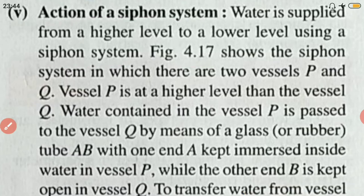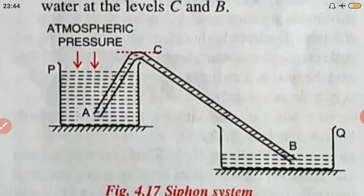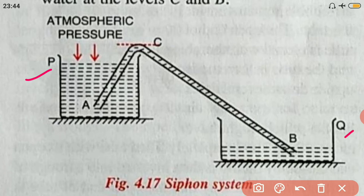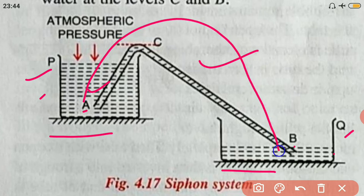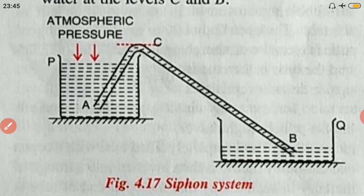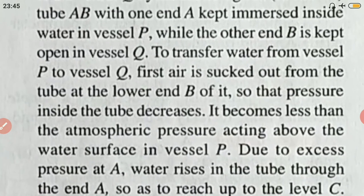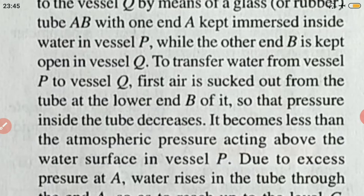In the diagram, vessel P is at a higher level than vessel Q, connected by tube A-B. Initially, the pipe is dipped into the liquid in vessel P. The pipe can be of various shapes — it does not have to be a specific shape. To transfer liquid from vessel P to vessel Q, air is first sucked out from the lower end B of the tube using the mouth or a vacuum pump.